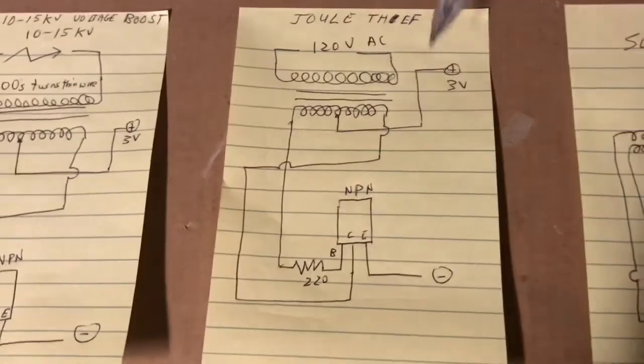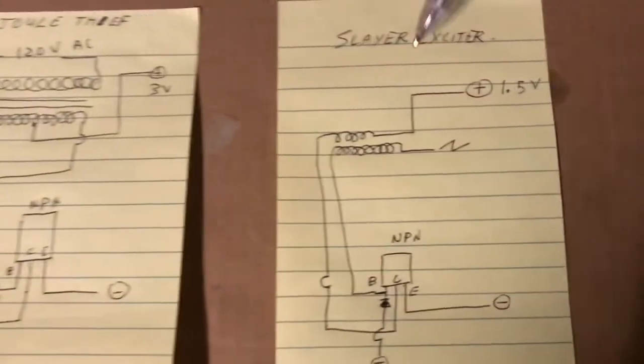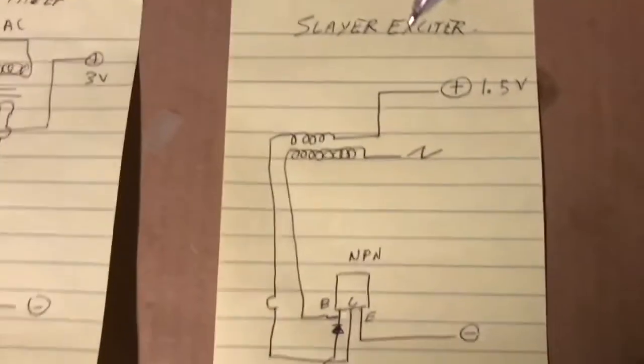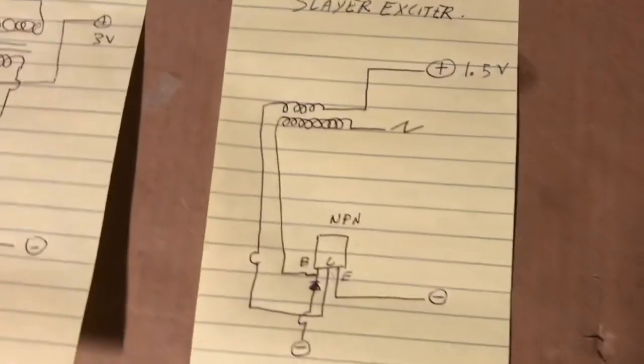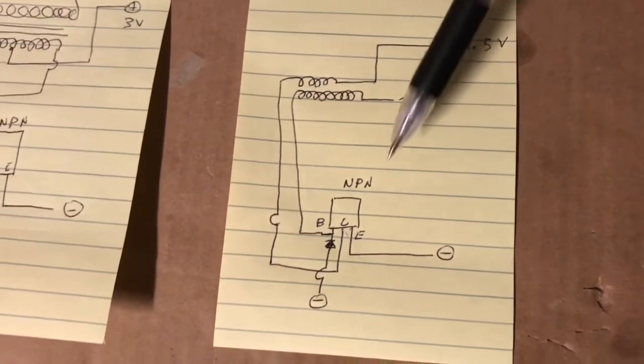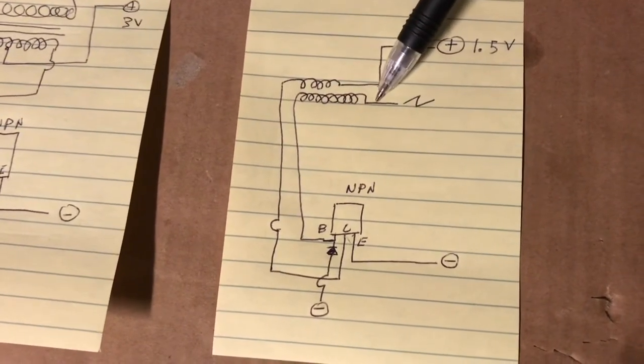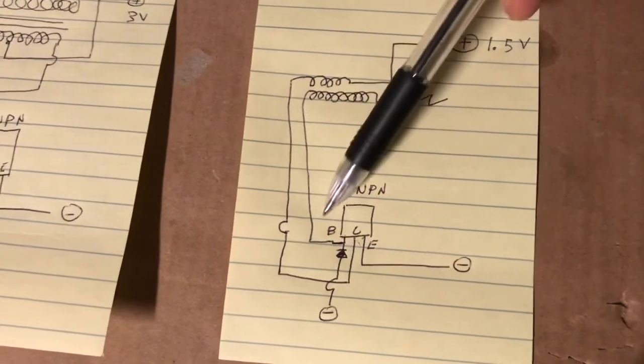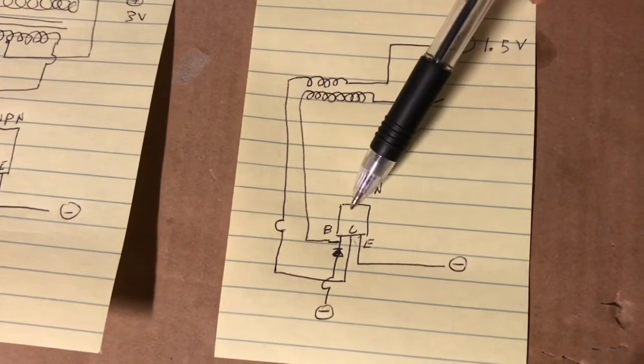Now here's your classic jewel thief. And here's a Slayer exciter which is a kind of Tesla coil that runs off of one transistor. It's a very similar arrangement, except you've got the base of your secondary connected directly to the base of the transistor.